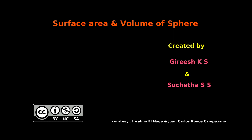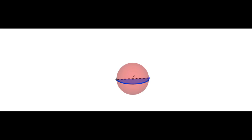In my previous video on cone, I told you that we are going to learn about sphere. In this video, we are discussing about sphere. So, what is a sphere? A sphere is a solid obtained by rotating a semicircle on one of its diameters.